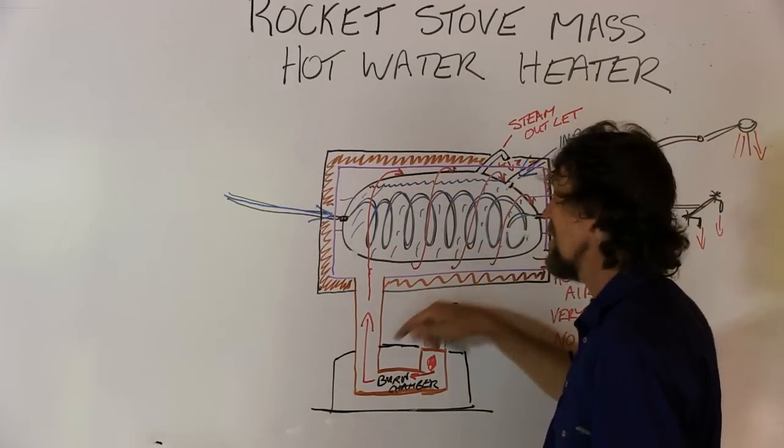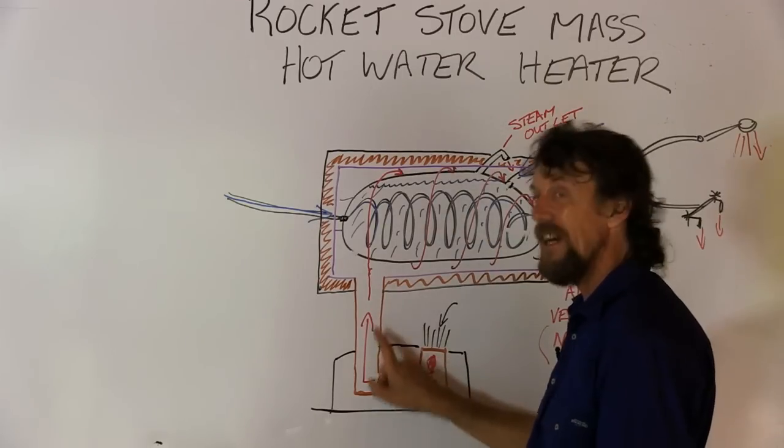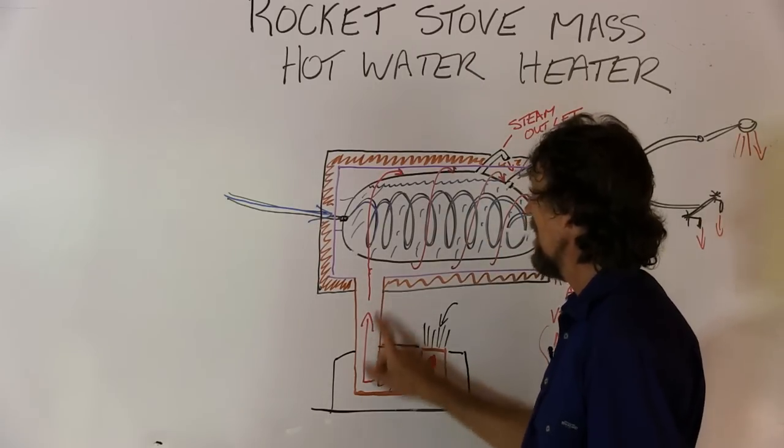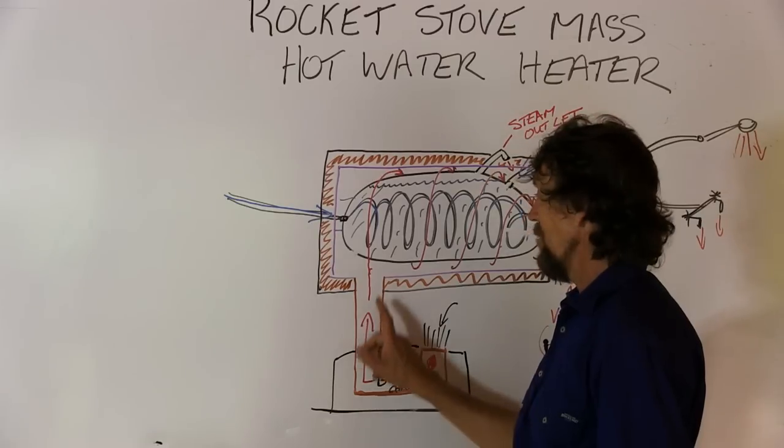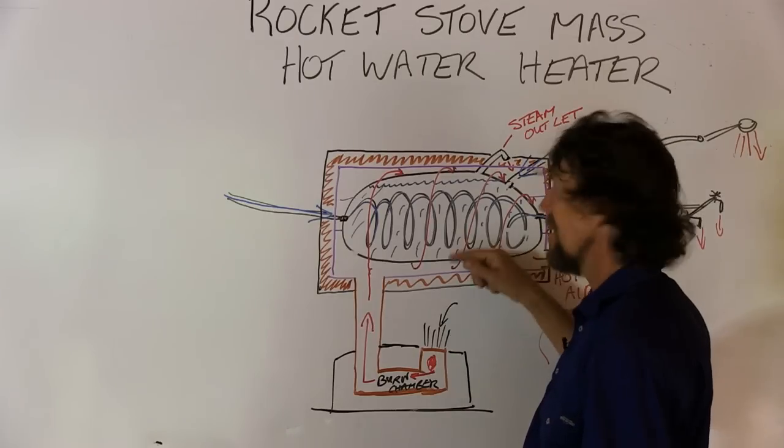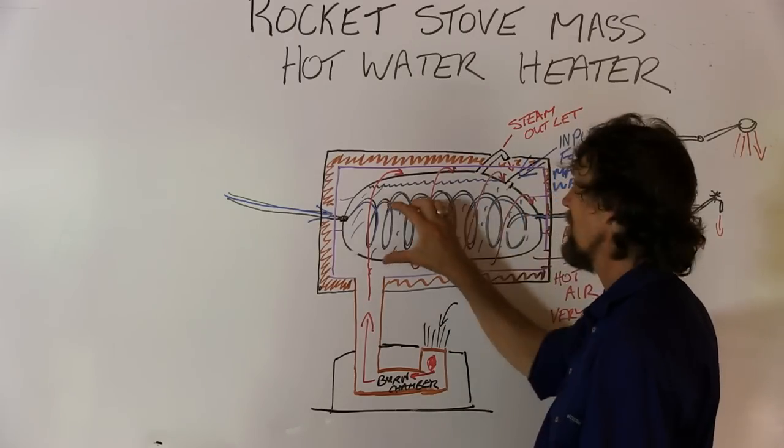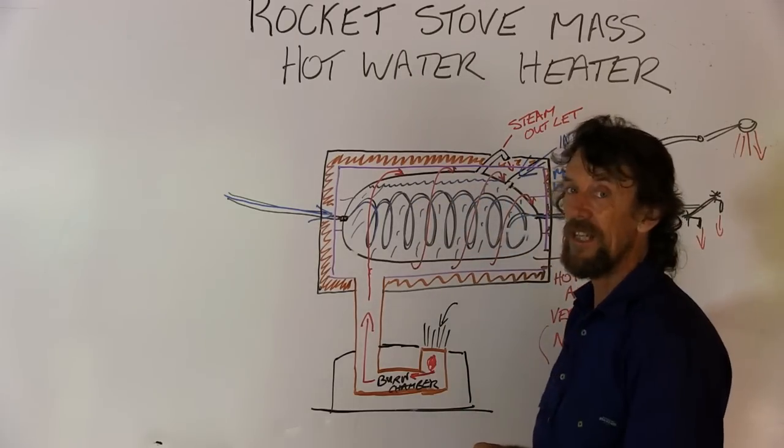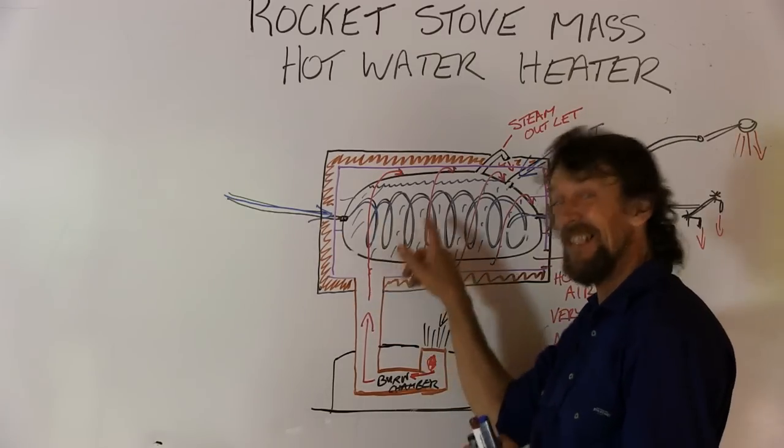And the air gap on the inside is where the smoke with the 800 to 1000 degrees centigrade chimney from the rocket stove is passing round the inside of the drum and the outside of the stainless steel water tank with the copper pipe inside that.